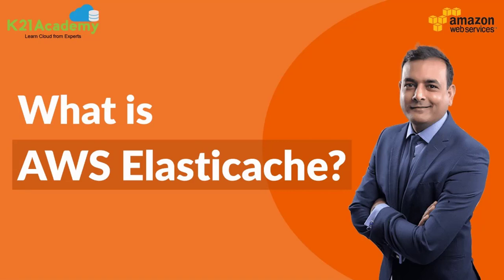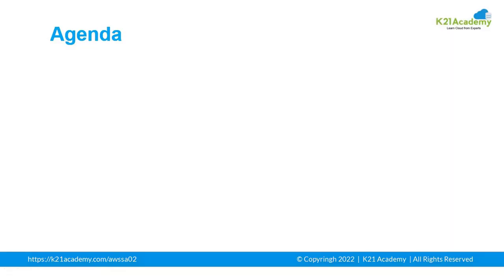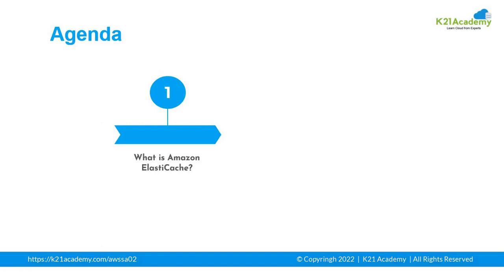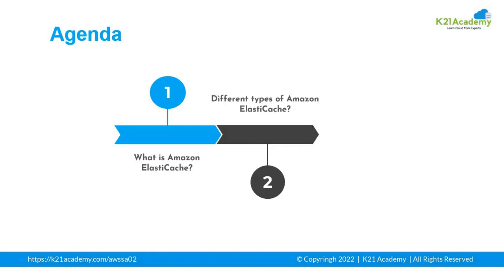ElastiCache is a service which helps to improve the performance of web applications by allowing users to retrieve information from fast managed in-memory caches. Welcome to another video of K21 Academy, where you learn cloud from the experts. Today we will be covering what is Amazon ElastiCache and the different types of Amazon ElastiCache.